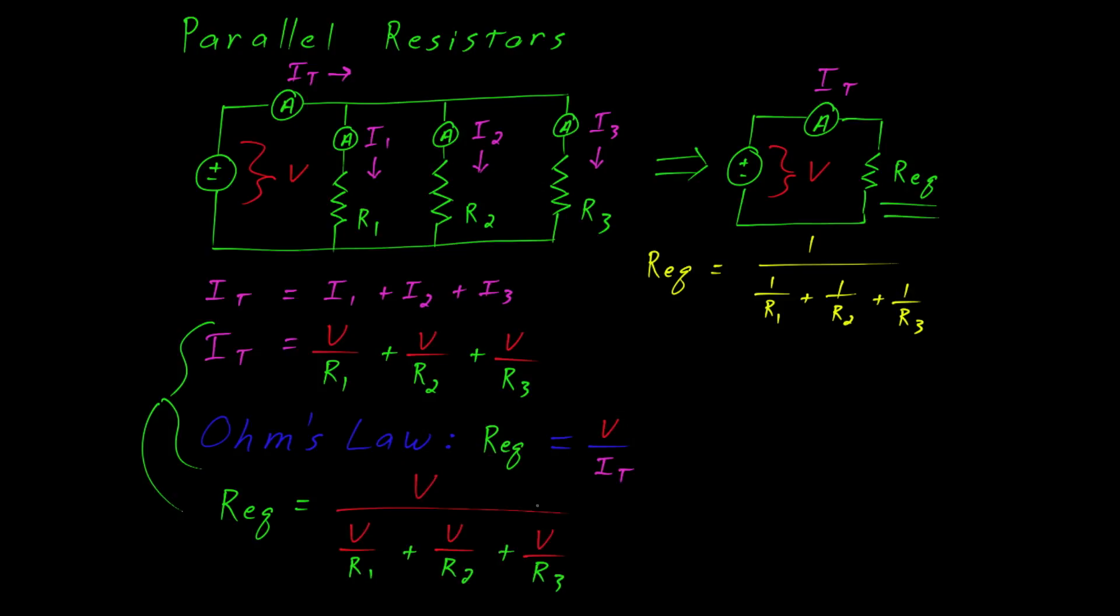We can now simplify this by multiplying both the numerator and denominator by 1 over V, which gives us 1 over 1 over R1 plus 1 over R2 plus 1 over R3, which is our original equation.